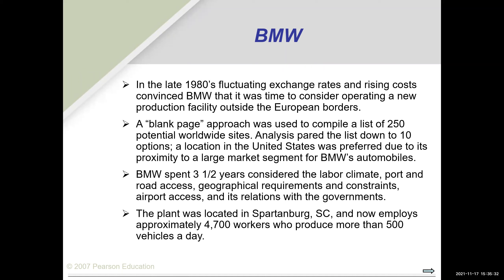BMW spent three and a half years considering the labor climate, port and road access, geographical requirements and constraints, airport access, and its relations with government. Like companies moving to Austin today, they sought access to educated human resources — for Austin, that means UT Austin and similar institutions. BMW decided to put a plant in Spartanburg, South Carolina, which now employs approximately 2,700 workers who produce more than 500 vehicles a day. In that area of South Carolina, they also have proximity to universities like Clemson and North Carolina State University, part of their consideration for access to human resources.